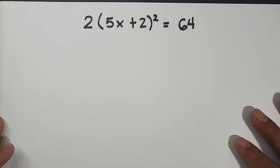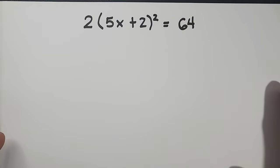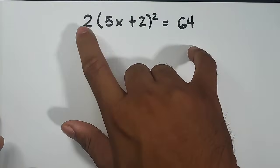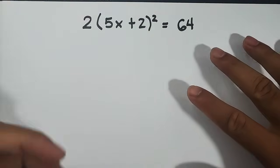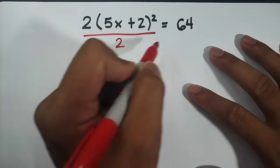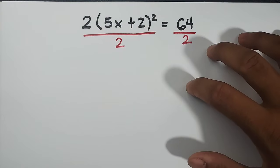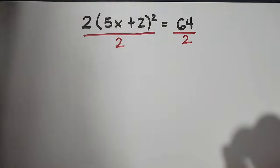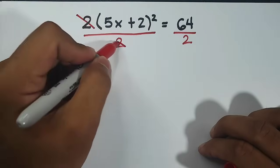Given this equation, as you can see, we have 2 times 5x plus 2 squared is equal to 64. The first thing you need to do here is to eliminate your coefficient 2. So what we need to do is divide both sides of the equation by 2 divided by 2. So what's next? After that, we can cancel out this 2 and 2.